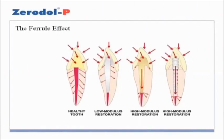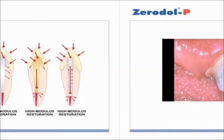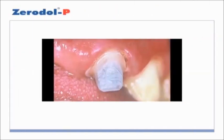The ferrule effect is important to long-term success when a post is used. A ferrule is defined as a vertical band of tooth structure at the gingival aspect of a crown preparation. It adds some retention but primarily provides resistance form and enhances longevity, increases retention. The ferrule effect resists lateral forces, reinforces the tooth at its external surface, and helps dissipate occlusal forces.